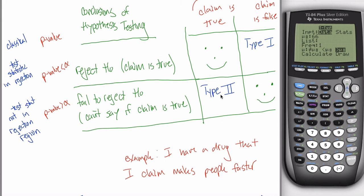But imagine a type 2 error: my drug really does lower blood pressure and you, the statistician, can't say that it does work. You're not saying the claim is false — you're not saying the drug does not work — you're just saying you can't say that it does work. What would happen is I, the manufacturer, would test it further: maybe give the drug to 10,000 patients instead of 100. You're just saying more evidence is needed. You never say the claim is false, so you're not telling me to get rid of my drug. Type 2 errors are benign; type 1 errors are a big deal.